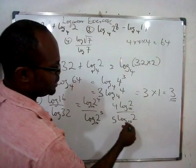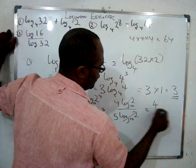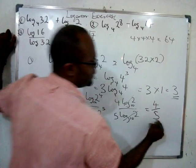log₁₀2 and log₁₀2 cancel each other, then we have 4 over 5. That is the answer.